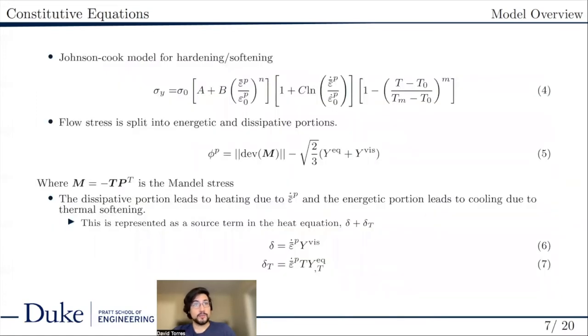There are several important constitutive equations to discuss. As previously stated, this model uses the Johnson-Cook model for softening and hardening. The Johnson-Cook model is useful in modeling the hardening and softening curves of a wide range of high-strength materials such as steel.